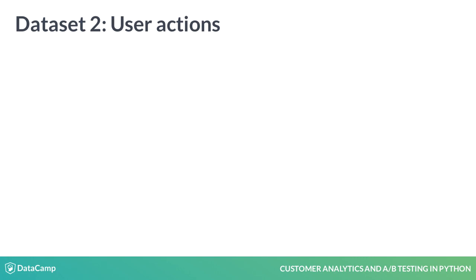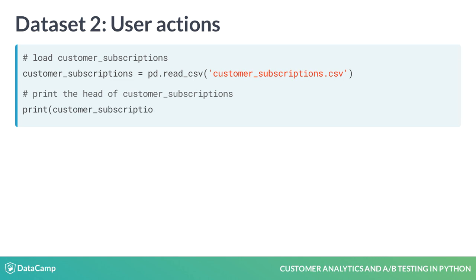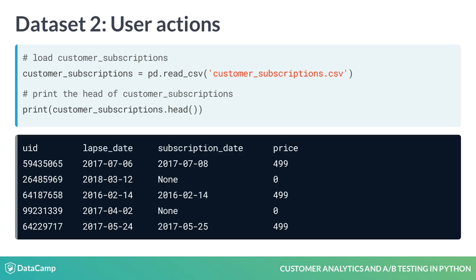The second is a set of user actions, called customer-subscriptions.csv, containing the date the trial period ended, the date of purchase if they purchased, and the price they paid upon subscribing in cents.